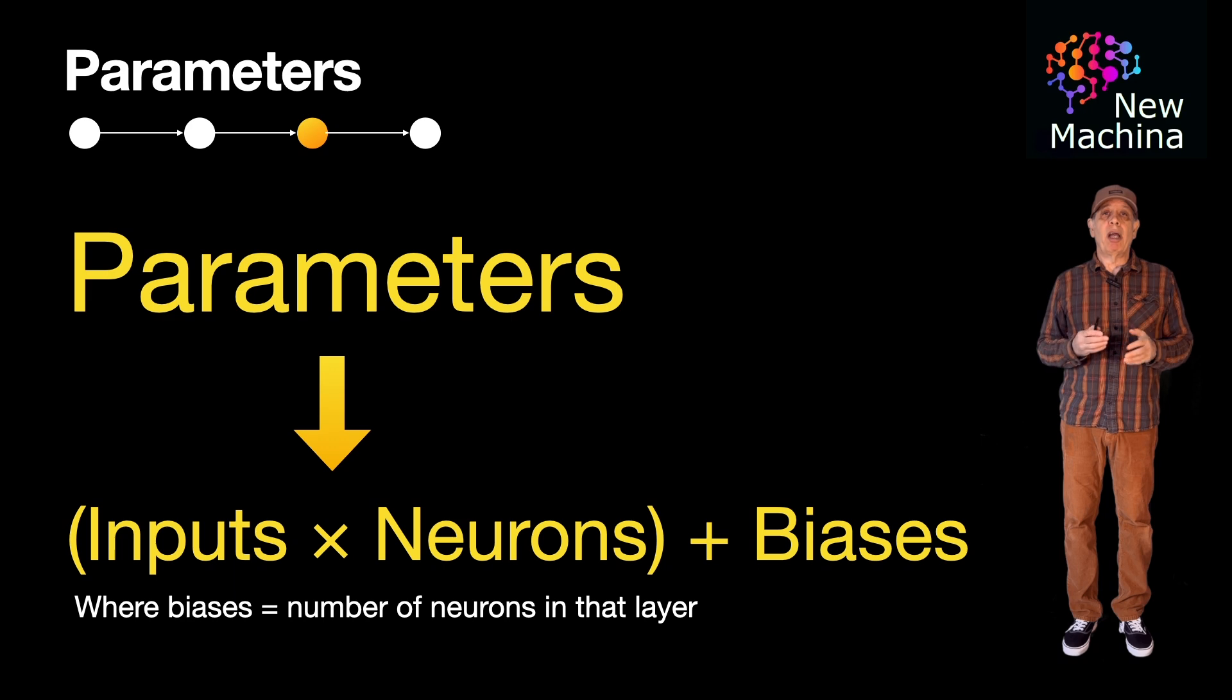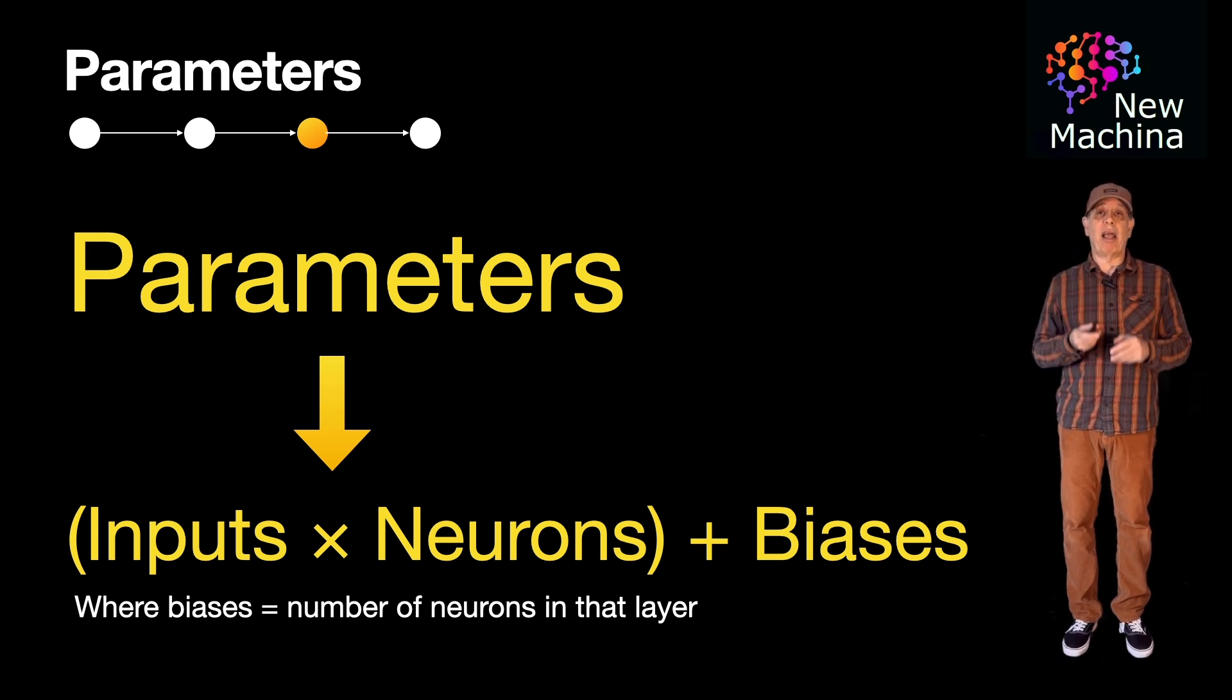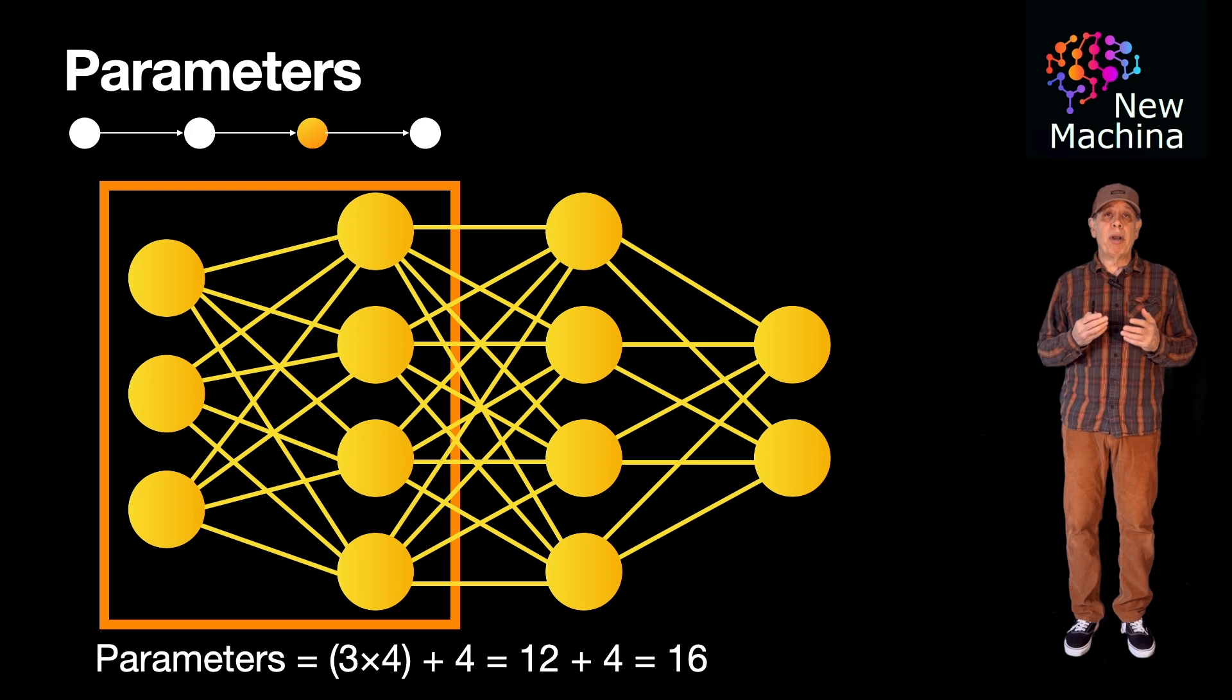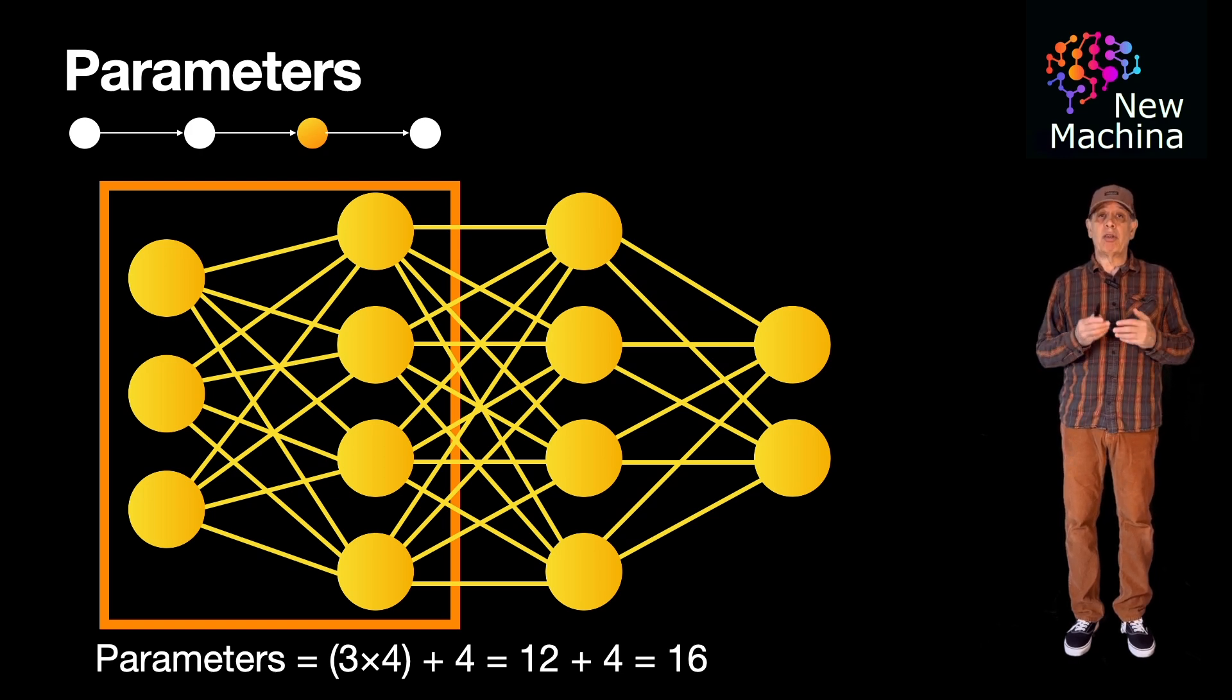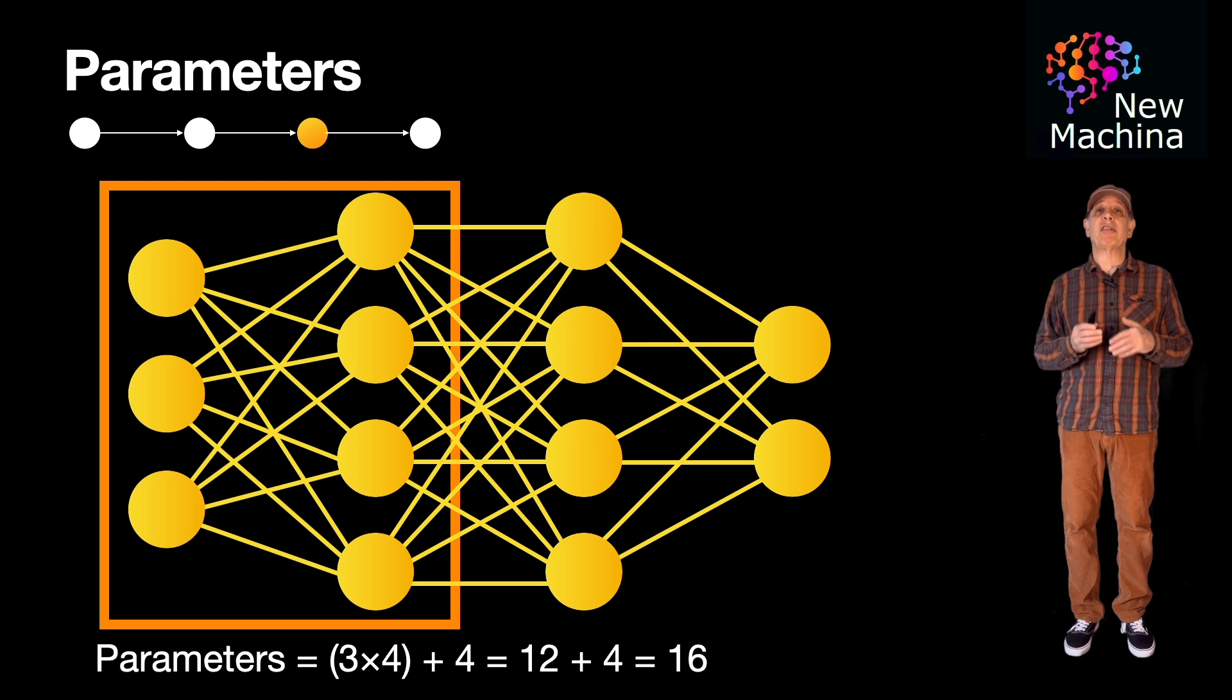So the general formula used to compute the parameters between each pair of connected layers is: the number of parameters is equal to the number of inputs multiplied by the number of neurons plus the number of biases. Note, biases are equal to the number of neurons in that layer. So in step one, with the input layer having three inputs that map to the first hidden layer with four neurons, we get three times four plus four biases, which gives us 16 parameters.